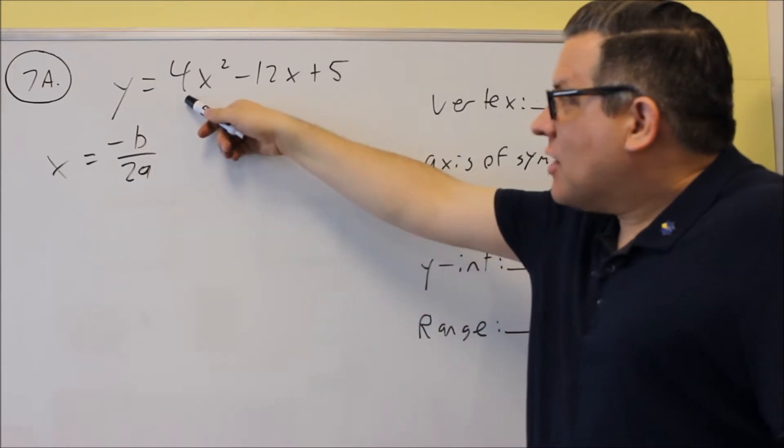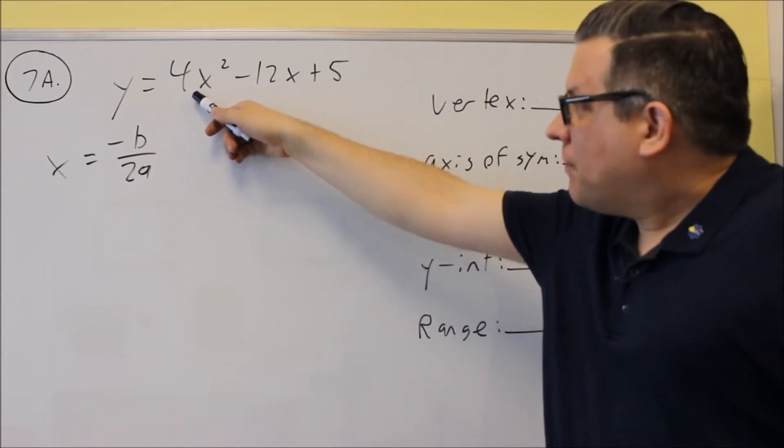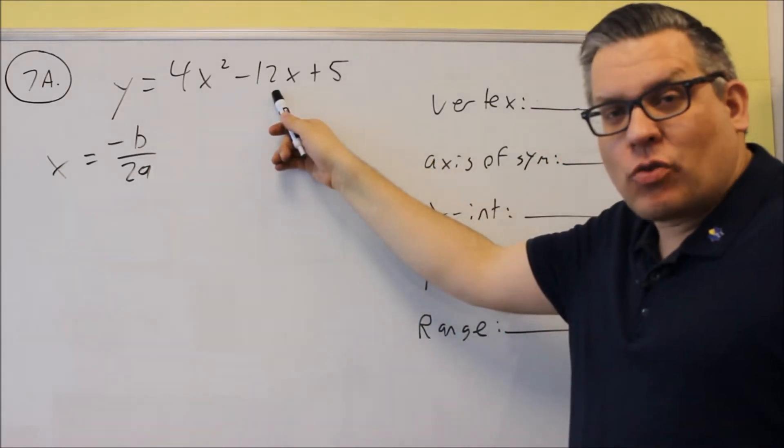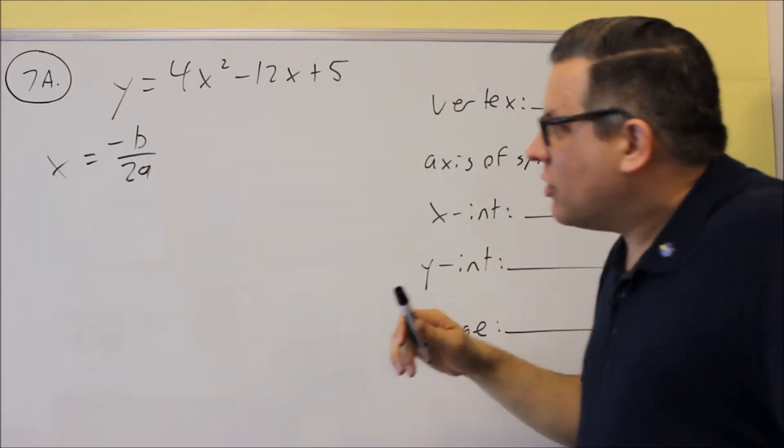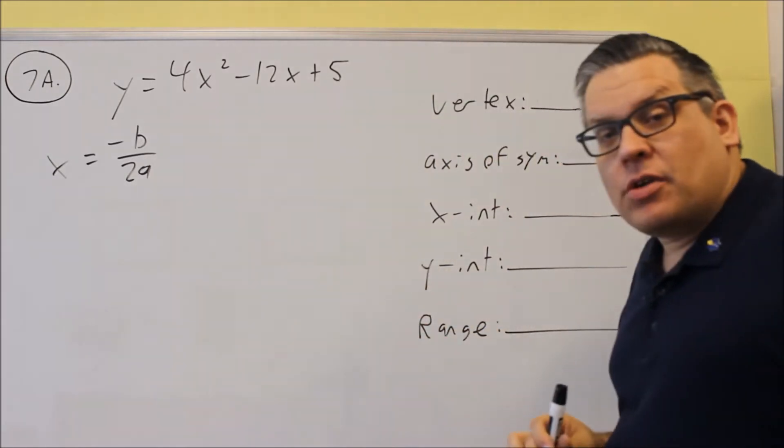The a and the b, the a is the number in front of the x squared, the b term is in front of just the regular x term, and your c is the number on the end there, which would be 5. We're not going to use it in this case, but that would be your a, b, and c.